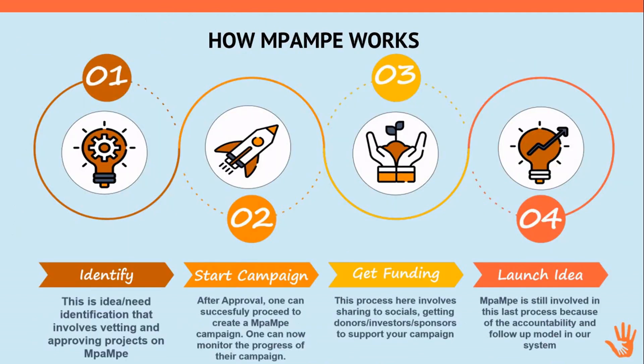How Mpampe works: we work in four simple steps. First, you identify what you need — that's ideation. Then you start a campaign on the platform, you get funding, and then you launch your idea — we call anything related to this an idea.